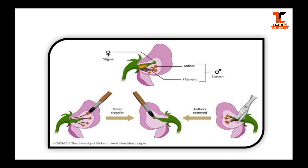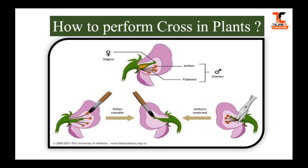You may have a doubt about how this cross is performed in the lab. As you can see in the diagram, a cross means transferring pollens from the anthers — that is, the male part — to the carpel, which is the female part of the plant. Here, the male and female plants belong to different varieties. The plant used here was Pisum sativum, that is, the green pea plant.